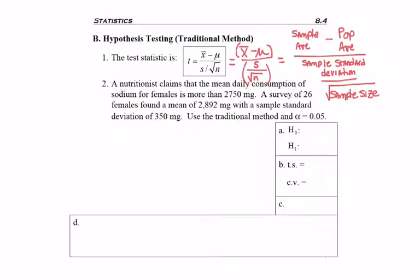So now let's go ahead and read over the problem. A nutritionist claims that the mean daily consumption of sodium for females is more than 2,750 milligrams. A survey of 26 females found a mean of 2,892 milligrams with a sample standard deviation of 350 milligrams used the traditional method. So that's how we know that we're using the critical value. Notice this says a sample standard deviation. This problem could have worked if the word sample had not been given because the sentence here is about the 26 females. So when it discusses their mean and standard deviation, it's only about the sample.